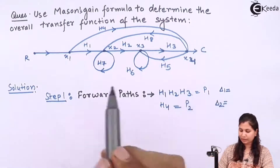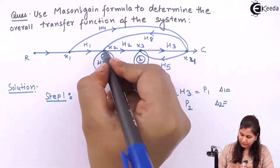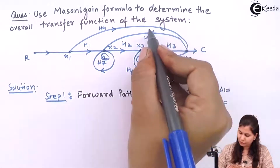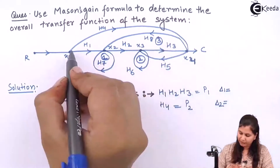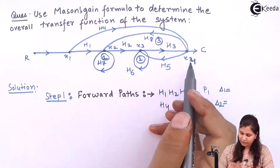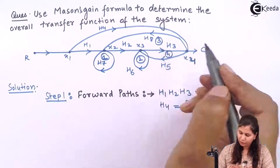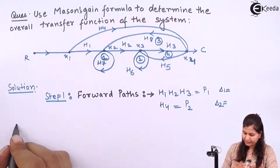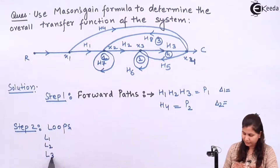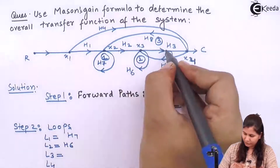Step 2: find out the loops. We identify four loops. L1 is the first loop, L2 starts from X2 and terminates at X2, L3 starts from X2 through X3 and X4 back to X2. L1 = H7, L2 = H6, L3 = H2·H3·H8, and L4 = H3·H5.